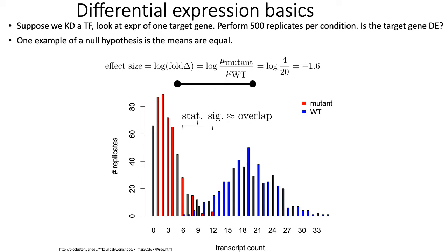The red curve represents the hypothetical measurement of that gene's expression after knocking down this particular TF. The blue curve represents the expression level of that gene in the wild type, when you didn't knock down the TF. This illustrates the concepts of effect size and significance with respect to differential expression testing.